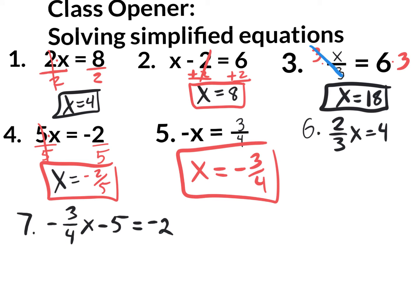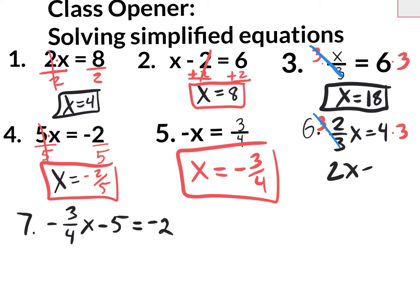Moving on to number 6, we finally get to a two-step problem. It says 2 divided by 3x equals 4. If you don't want that divided by 3, it would be nice if you just had 2x. So we could get rid of that division of 3 by multiplying by 3, both sides. The 3s cancel, and we get 2x equals 12. To get rid of that multiplication, divide by 2, divide by 2, which gives x equals 6.